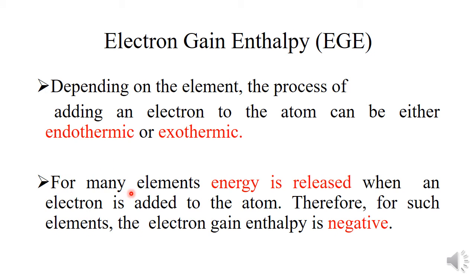For many elements, energy is released when an electron is added to the atom. Therefore, for such elements, electron gain enthalpy is negative. For most elements of the periodic table, energy is released when we add an electron to the atom — the process is exothermic — so in that case the electron gain enthalpy is negative in magnitude.